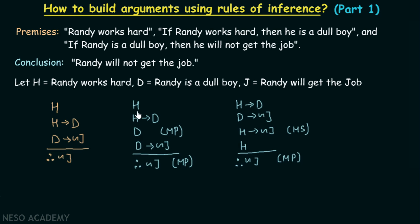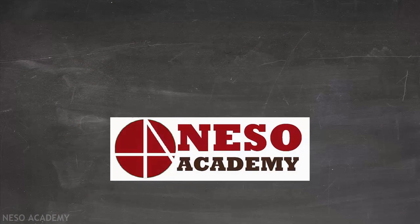As shown in these two examples, in the first I chose H and H implies D initially, while in the second I chose H implies D and D implies not J. It totally depends on you what premises you choose, but finally you should get the desired conclusion — in this case, not J. Thank you for watching this lecture.